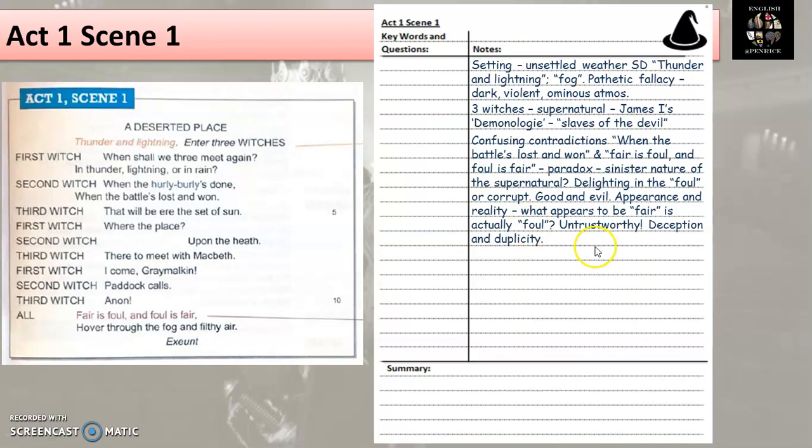Furthermore, just extending my notes even more, it links to the theme of appearance and reality in the play. What appears to be fair, what appears to be good and beneficial is actually foul, is actually harmful. And then using my notes or the video on the scene that I've watched, I'm also just going to note down that this conveys the witches to be untrustworthy from the very start of the play. We can't trust them because of the way they view the world and the way that they talk in such confusing contradictions. And it links to their deception, how they deceive Macbeth and their duplicity, which means saying one thing or appearing in one way, but actually being another. It's a more sophisticated word for being two-faced.